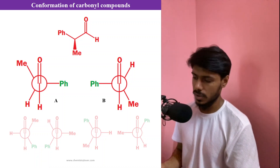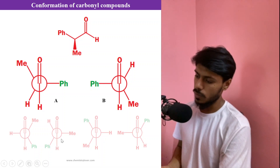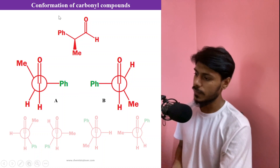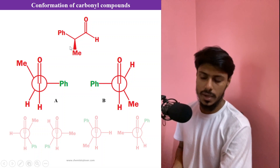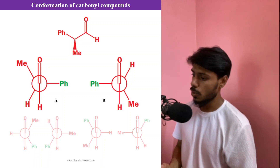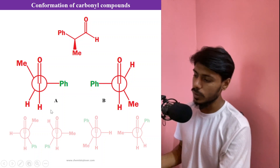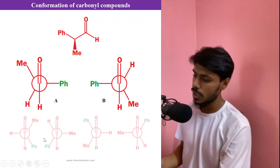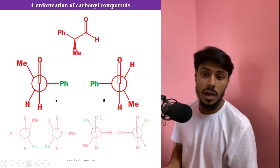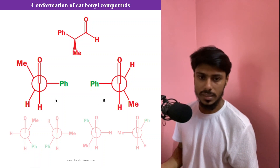Before looking at the mode of attack, we need to know the reactive conformation of the molecule. Taking our model compound, conformations A and B are the most stable and most populated. The other four conformations shown are much less populated. Looking at the back carbon, we have a phenyl group, a methyl, and a hydrogen. Phenyl is the bulkiest group, so it must be placed away from both the oxygen and the hydrogen — only conformations A and B achieve this.